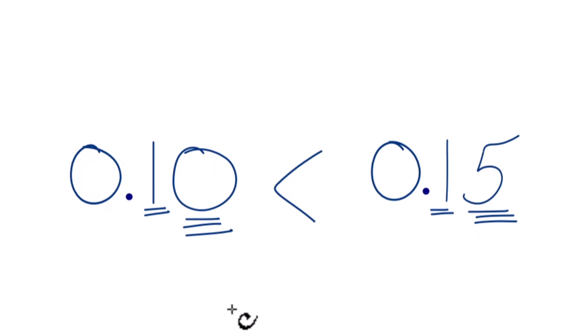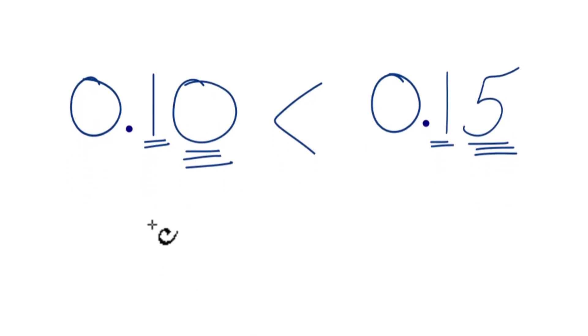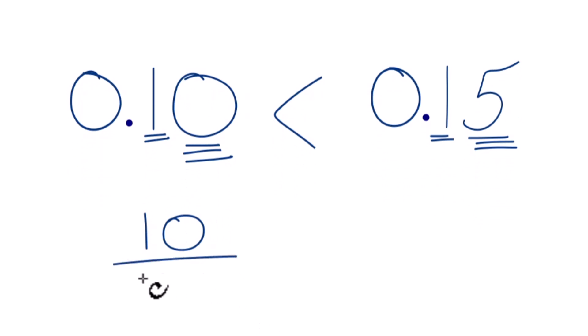Sometimes teachers want you to write this as a fraction. So you could call this 10 over 100, and 0.15 would be 15 over 100.